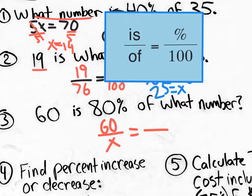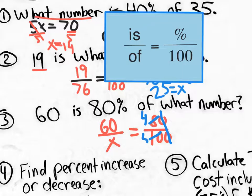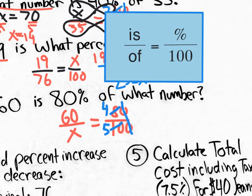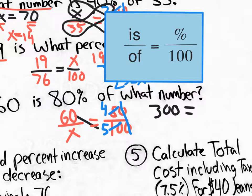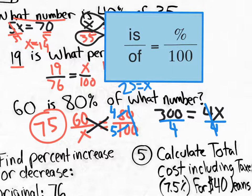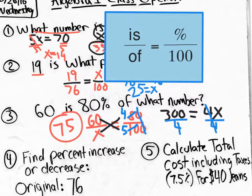Set up fraction equals fraction: 60 over x equals 80 over 100. Cancel zeros to reduce 80 over 100 to 8 tenths, then further to 4 fifths. Cross-multiplying: 60 times 5 equals 300, and that equals 4x. Dividing both sides by 4 gives x equals 75. So 60 is 80% of 75.